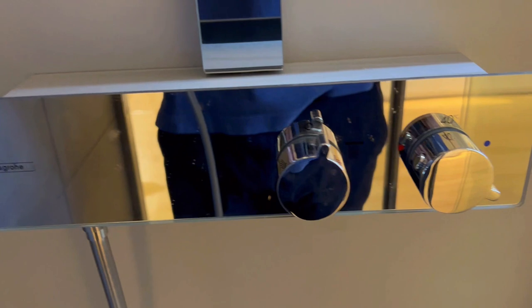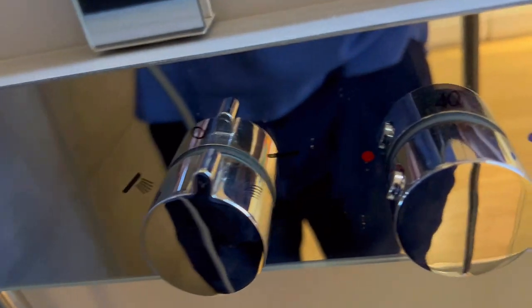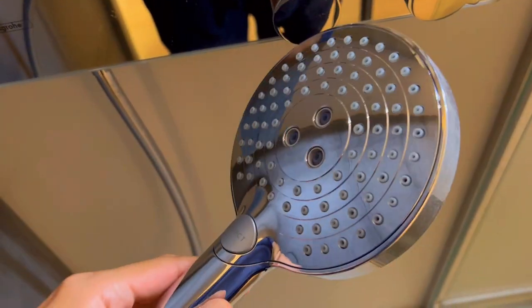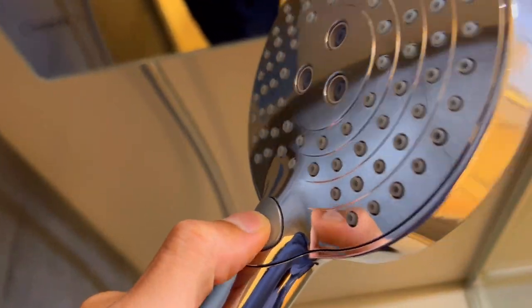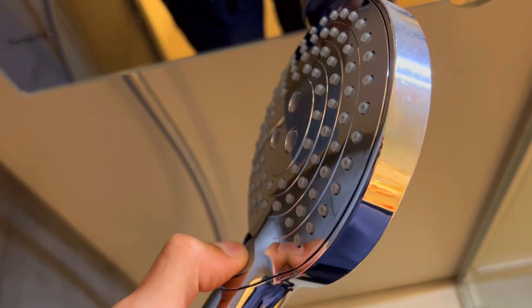Second, ever been scorched by a sudden burst of hot water or chilled by an unexpected cold blast during your shower? The Grohe thermostat is the unsung hero here. No more temperature surprises. Its steady hand keeps your shower temperature just the way you like it, even if your water pressure decides to dance. It's like having your own personal temperature bodyguard.